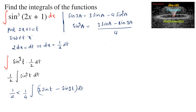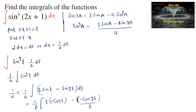Let us integrate: 1/8 times [3 times (-cos t) minus (-cos 3t / 3)] plus constant c. The integration of sine is minus cosine, and for sin3t the coefficient of t is 3, so it gives minus cos3t / 3.